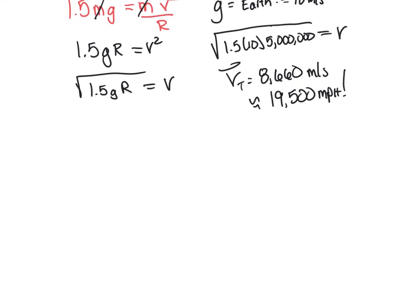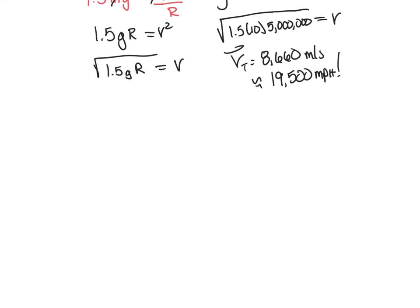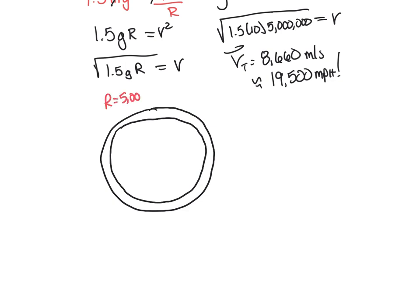Another thing we can look at is, what is its angular velocity? How long does it take the halo ring to make a rotation? We know that the radius is 5 million meters. That's my radius R here. And I want to figure out how fast it's going angularly.